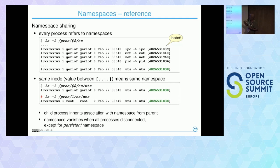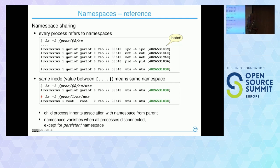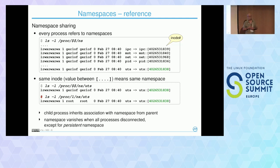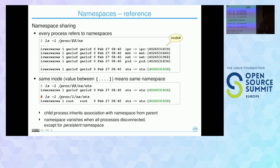Child processes inherit namespace associations from their parent. A namespace vanishes — disappears automatically — at the moment all processes bound to it have exited. You can confirm shared namespaces by comparing the numbers in /proc/[PID]/ns/uts, for example. Matching numbers confirm they share the same UTS namespace and have the same hostname.